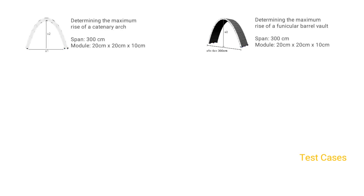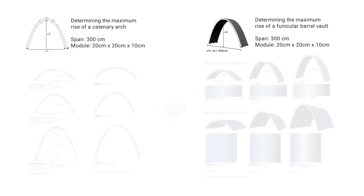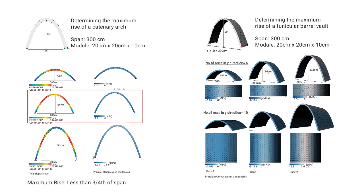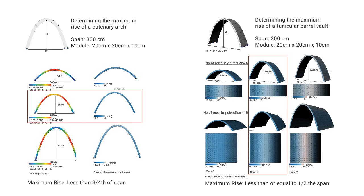Catenary arches and funicular barrel vaults of 300 cm span and varying heights were simulated using module size 20×20×10 cm. It was observed that the height of the structure should be less than three-quarters of the span for a catenary arch, and for a funicular barrel vault, the rise should be equal to or less than half the span.